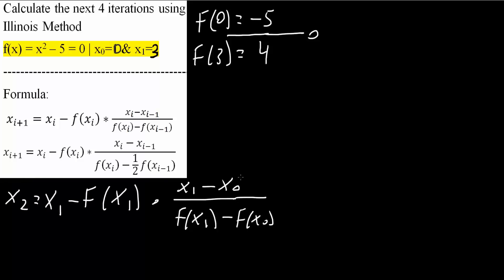And once we have it in this form, we simply plug in what we have based off of this. So x1 was 3 minus f(x1) was 4 times 3 minus 0 divided by 4 minus parentheses minus 5, like this. And this right here would equal 1.667.